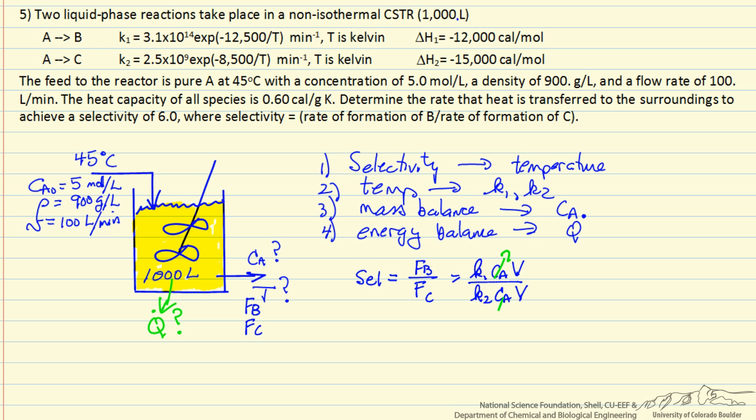Of course the CAs and the Vs cancel, so the selectivity ratio, which is 6, is just the ratio of these rate constants. Where the only unknown is temperature, so we should be able to solve now for temperature after substituting in the equations for the rate constant.